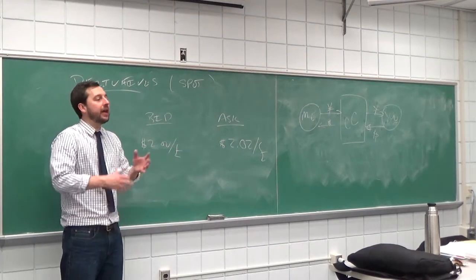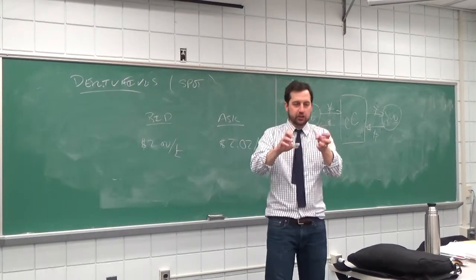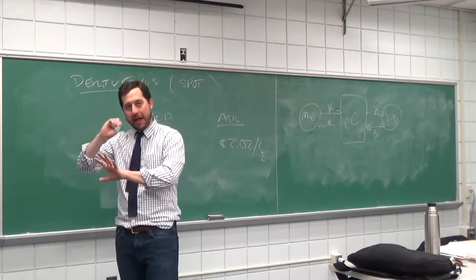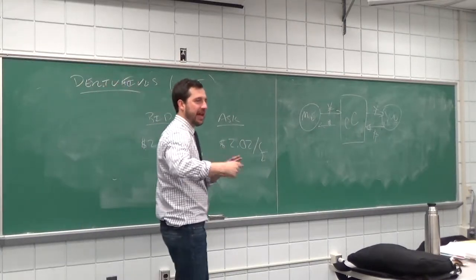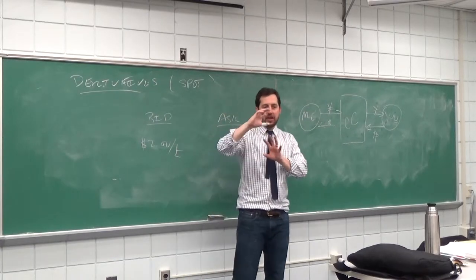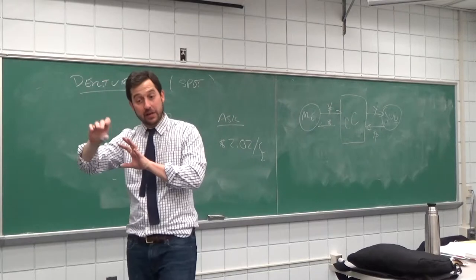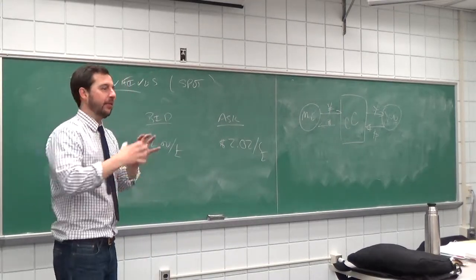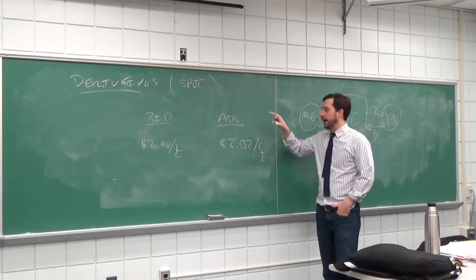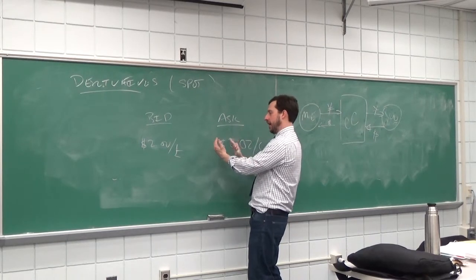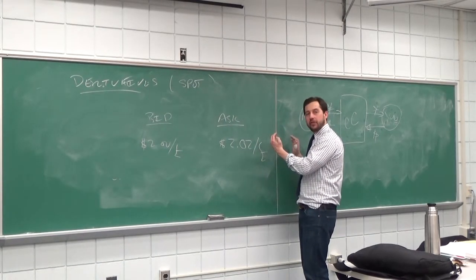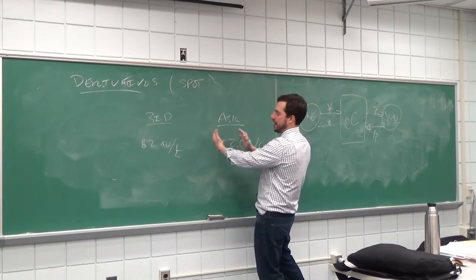The desire to hedge is a function of how certain you are about the cash flow. Over the next couple months, if I'm Apple selling computers in Europe, I have a fairly decent idea of how many euros I'll receive, so I can hedge that. However, once we go out past a year or two years, the amount I'll sell in Europe and the cash flows I'll receive become much less certain — I can't hedge them because I don't know how much to hedge. So corporations don't hedge farther and farther out; past six months, and particularly past a year, there's very little trading, and the bid-ask spread tends to be wider.